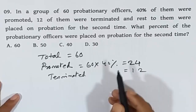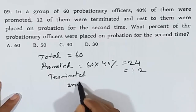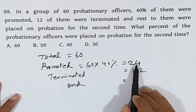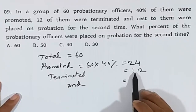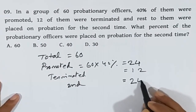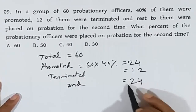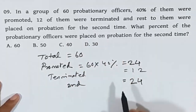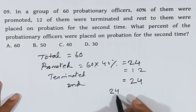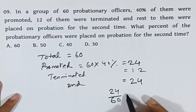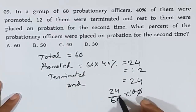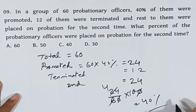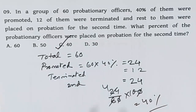The rest were placed on Probation for the second time. Total is 60, minus 24 promoted, minus 12 terminated, leaves 24 on Probation for the second time. So 24 out of 60 into 100 equals 40%. The answer is 40%, and this number option is correct.